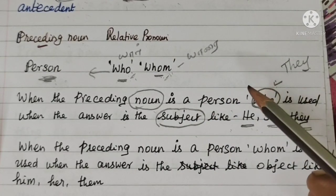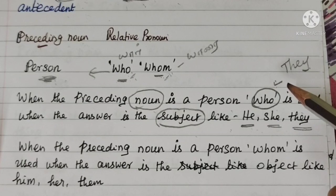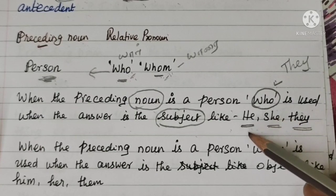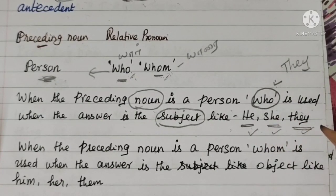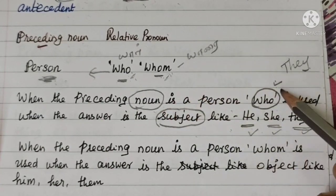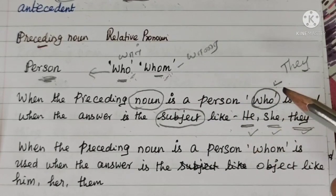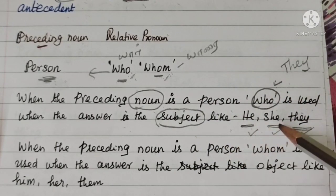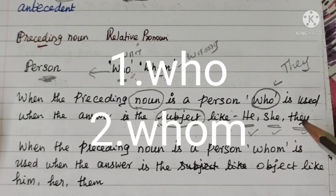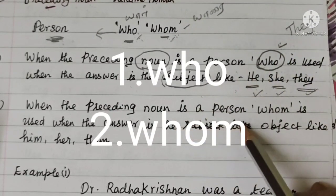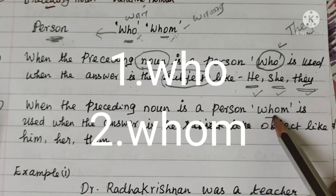Who comes to the place? The answers are he, she, they. So if we ask a question for the noun, we get he, she, or they as the answer. That is why when the preceding noun is a person and the answer is a subject pronoun, 'who' is used.